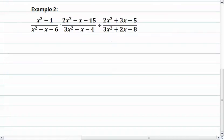Now in our second example, again notice that our last term is being divided, and again we want to factor everything first. So in our first term on the top, we have a difference of squares, which is x minus 1, x plus 1.